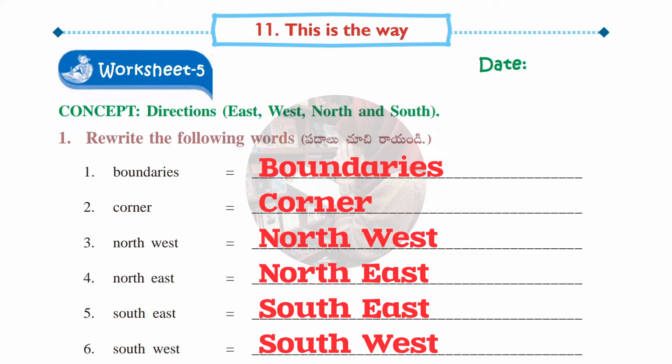Worksheet number five — concept is directions east, west, north, and south again. Some words are given to rewrite: Boundaries, Corner, North-West, North-East, South-East, South-West. Please make sure every letter is written clearly and correctly.